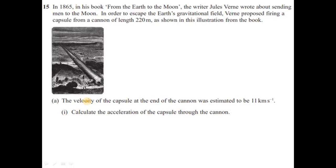In 1865, in his book 'From the Earth to the Moon', the writer Jules Verne wrote about sending men to the moon. In order to escape the Earth's gravitational field, Verne proposed firing a capsule from a cannon of length 220 meters, as shown in his illustration from the book. The velocity of the capsule at the end of the cannon was estimated to be 11 kilometers per second.